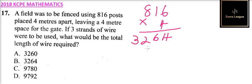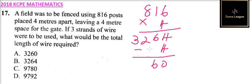We then subtract 4 meters for the gate. So 3264 minus 4 gives us 3260 meters. This is the perimeter available for the wire.